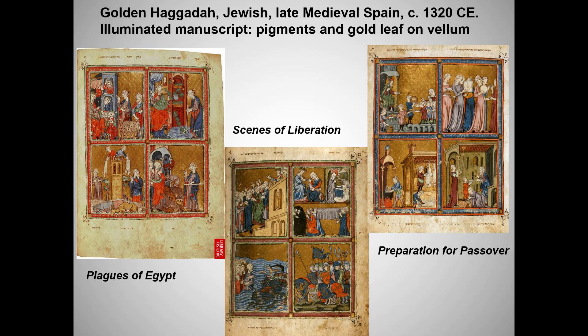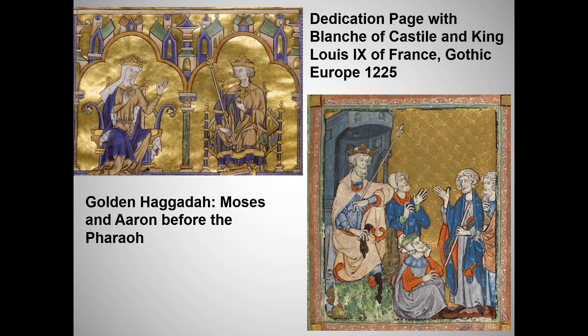I debated where to put the Golden Haggadah and chose to talk about this Jewish manuscript in the unit on Islamic art. In Unit 6, we will be comparing its pages with Gothic illuminated manuscripts that closely resemble the Haggadah. The required French Gothic illuminated manuscript shows a king and queen of France, while the illustration from the Golden Haggadah shows Moses and Aaron coming before the Pharaoh, who looks a lot like a French king. Some art historians think the wealthy Jewish family that commissioned the Haggadah may have hired Christian Gothic artists to produce it.